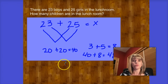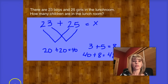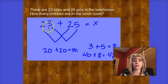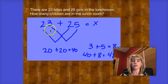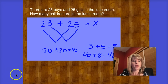If we put 40 plus 8 together, we have 48. So the answer to our problem is there are 48 children in the lunchroom. The splitting strategy works by breaking apart the numbers into their friendlier parts — those tens and ones. Now we're going to try a couple more problems. Try them on your own and then we'll check our answers together. Are you ready?